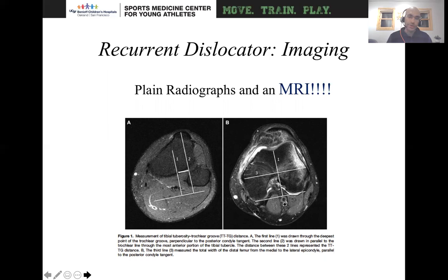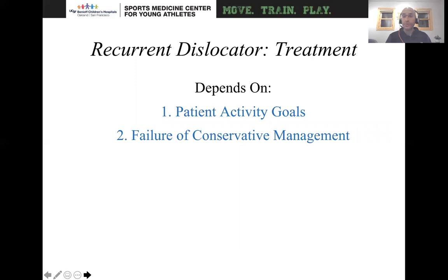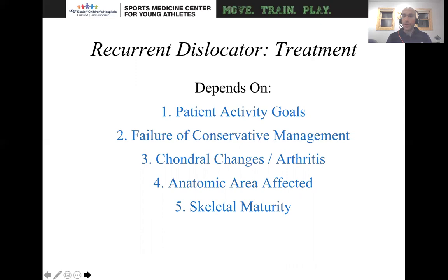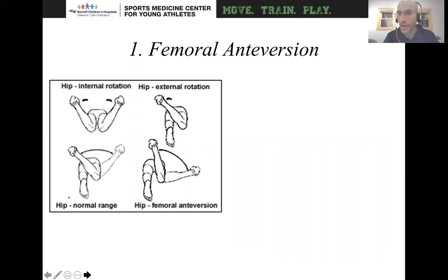You want to get plain radiographs and MRI in these situations as well. Treatment really depends on what their activity goals are, whether they've failed conservative treatment, whether they have arthritic changes, what area is anatomically affected, and how skeletally mature they are. In terms of treatment, it can be like drinking from a fire hose.